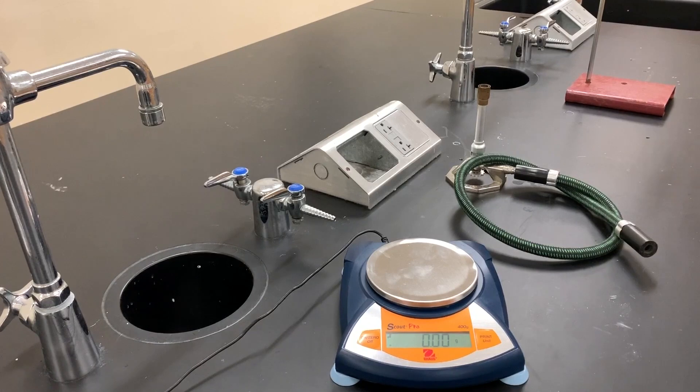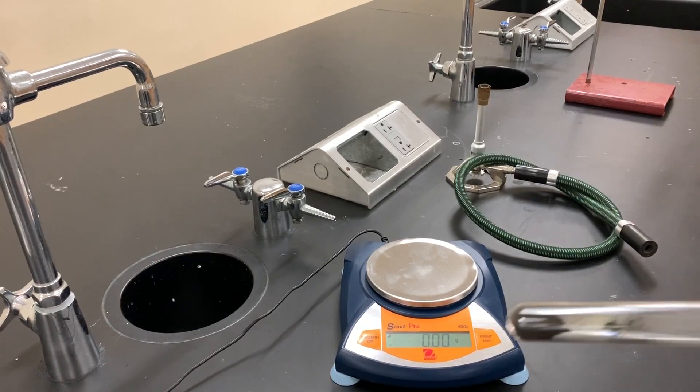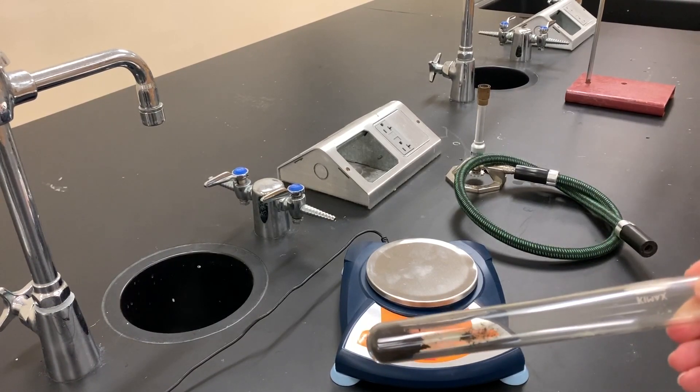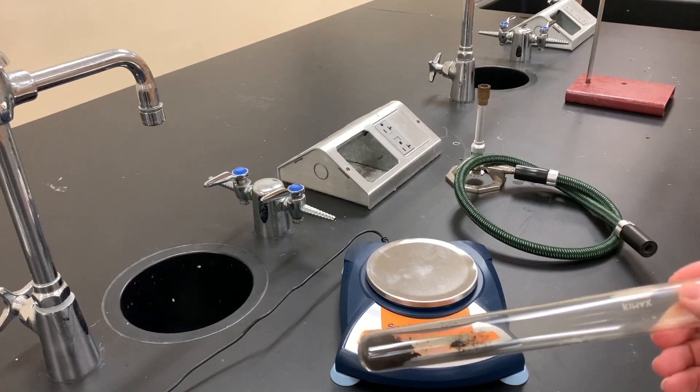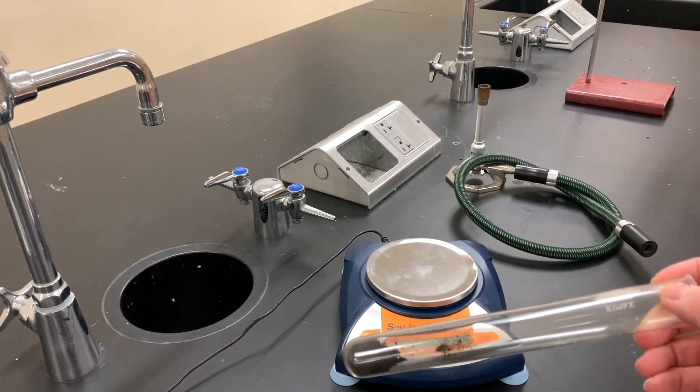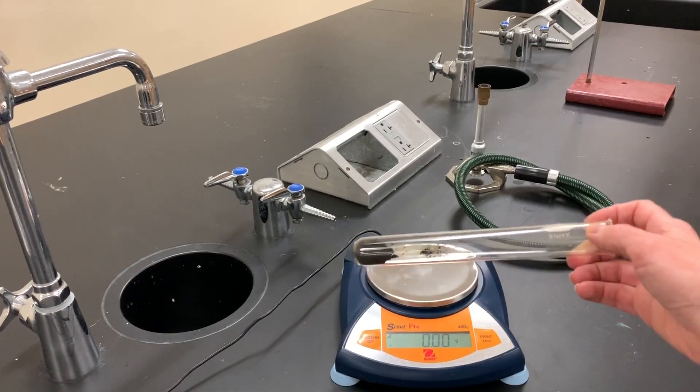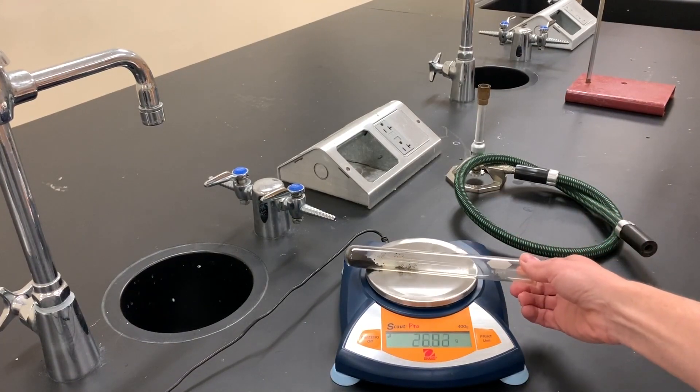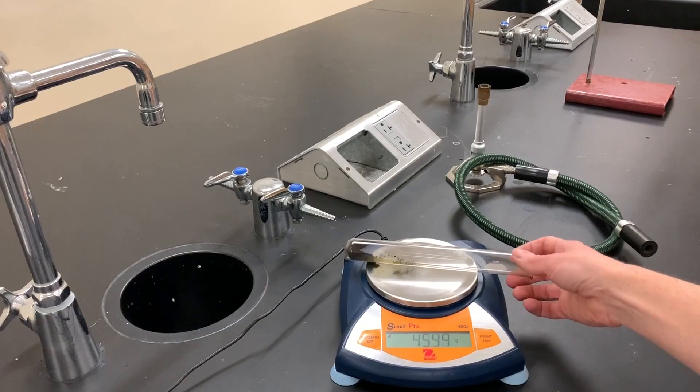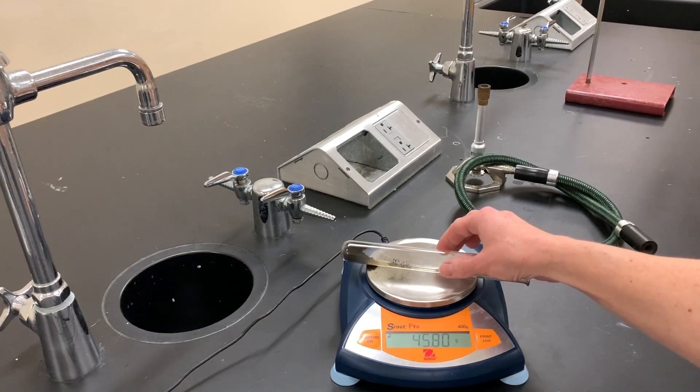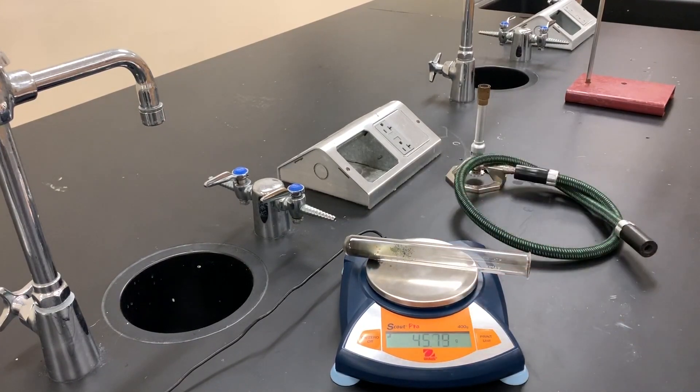Using that same electronic balance, have it on zero and gently place your very cooled test tube. Make sure it's not warm at all because that will give you an error reading on the mass. You should see that the mass has gone down because we've driven off carbon dioxide.